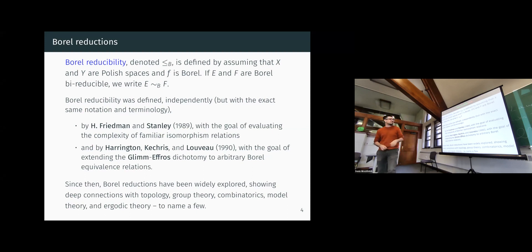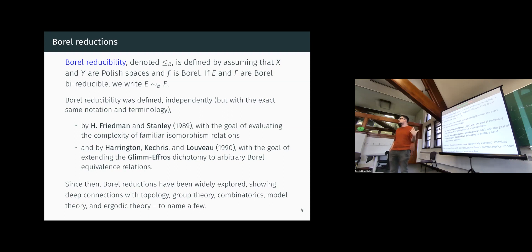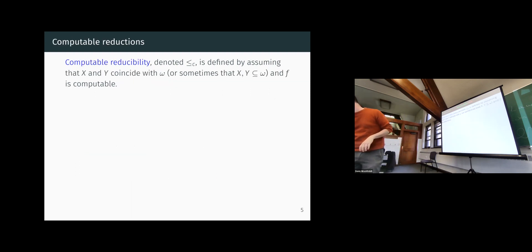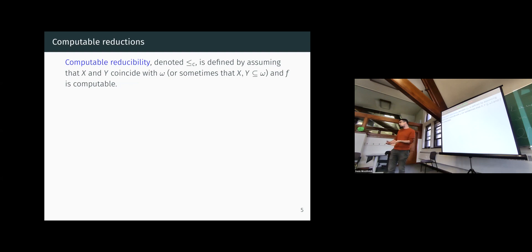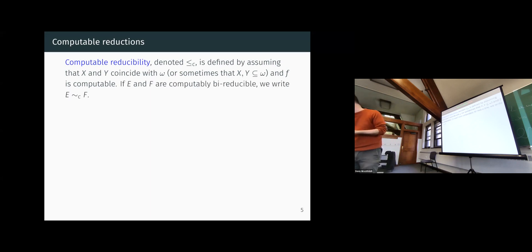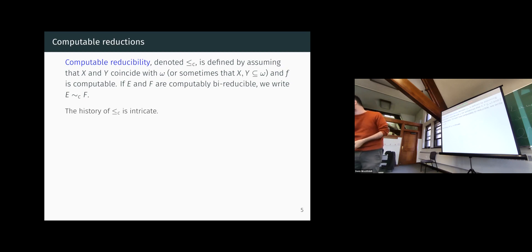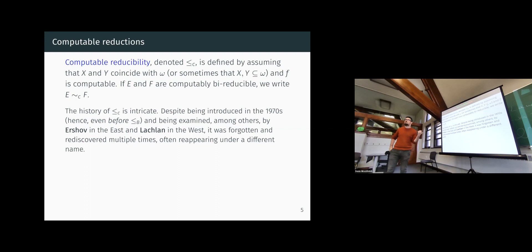Borel reducibility has been explored extensively and has connections with different areas of mathematics — in particular, with group theory. On the other hand, computable reducibility has been the main tool for classifying equivalence relations on omega. Here X and Y are sets of natural numbers and we require f to be a computable function. We have a notion of computable bi-reducibility and, from that, a notion of degrees.